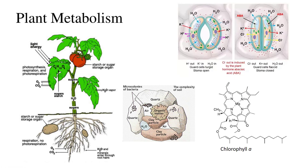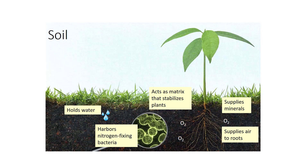Nitrogen must be reduced, and elaborate electron transport chains are necessary to convert it to useful forms. Soil has both abiotic and biotic components: minerals, flora and fauna, water, and air. The various soils are important to plants not only in supplying minerals and harboring nitrogen-fixing bacteria, but also in holding water, supplying air to roots, and acting as a matrix that stabilizes plants, preventing them from blowing over.